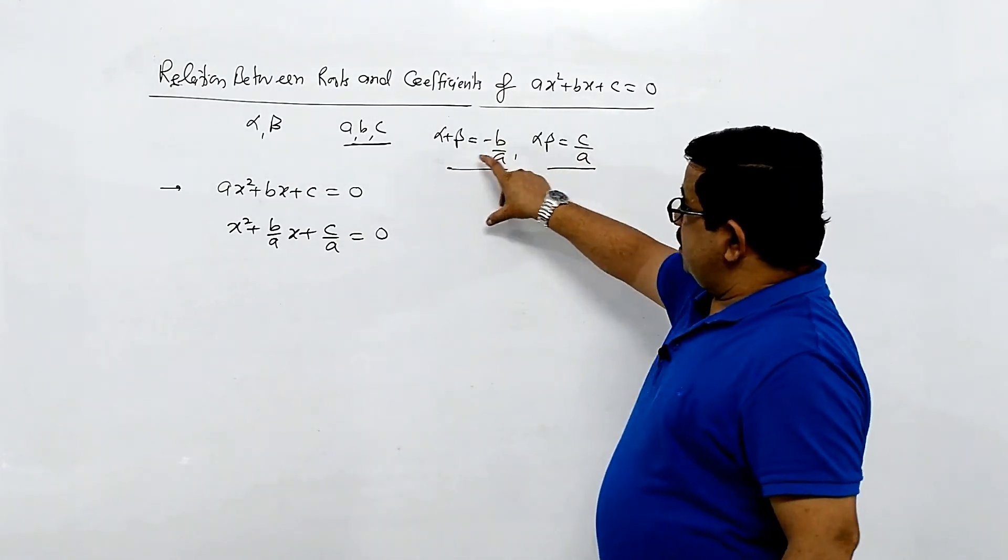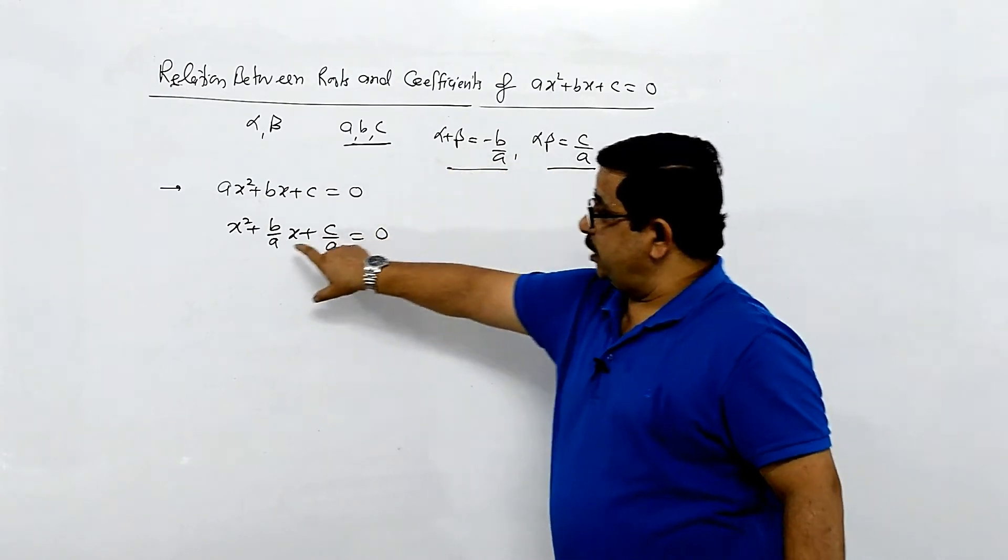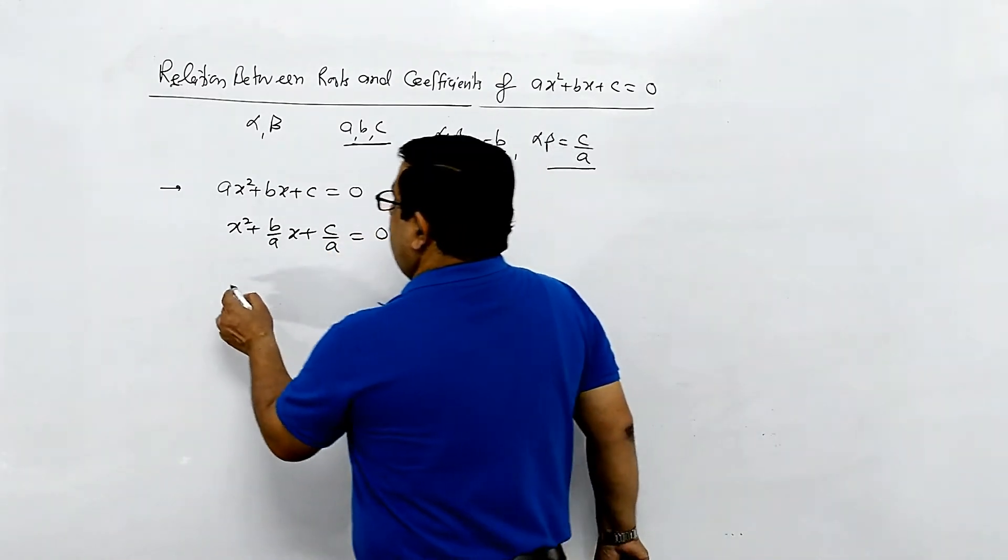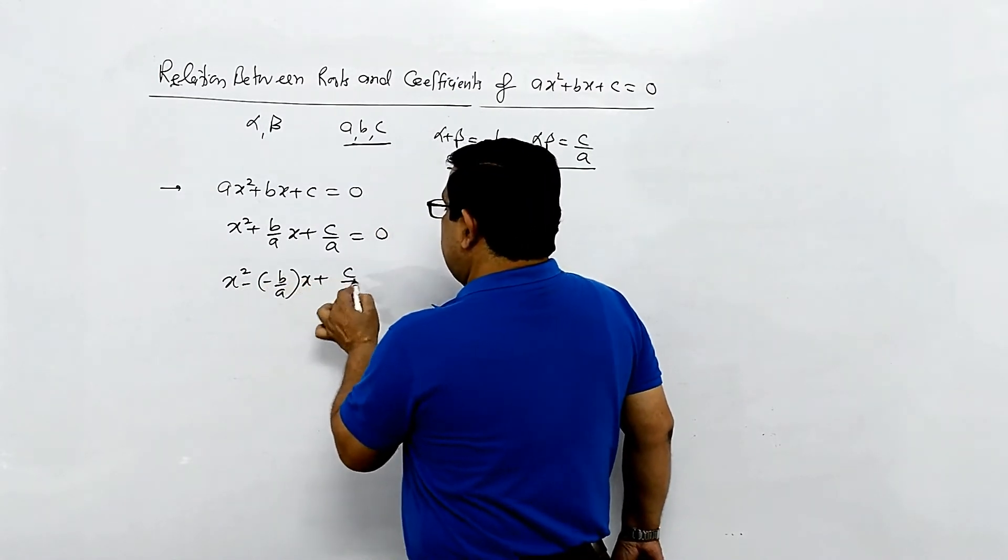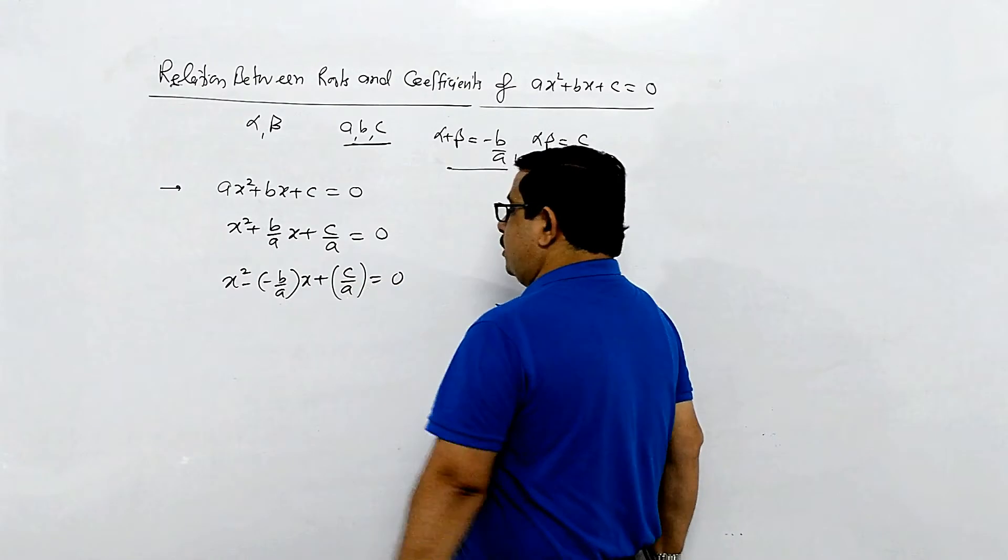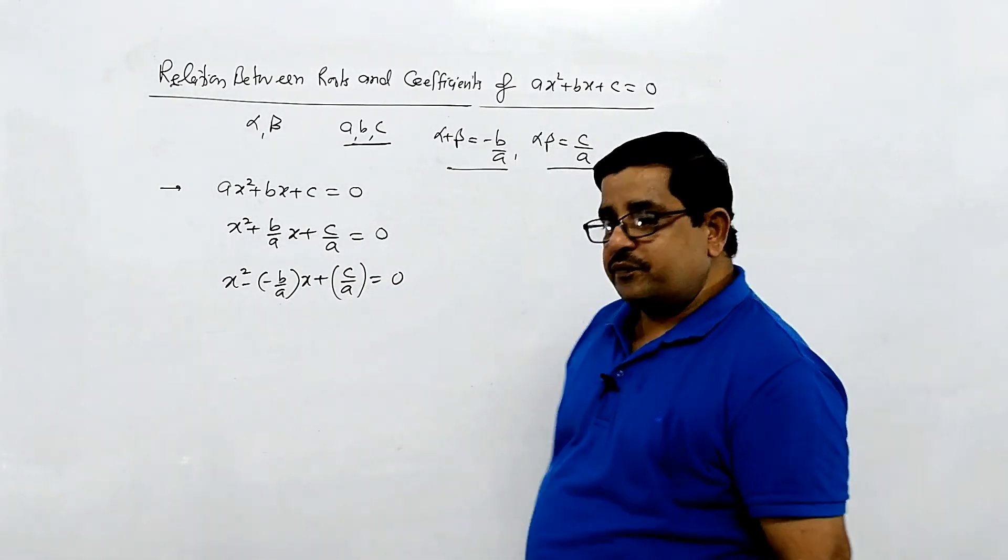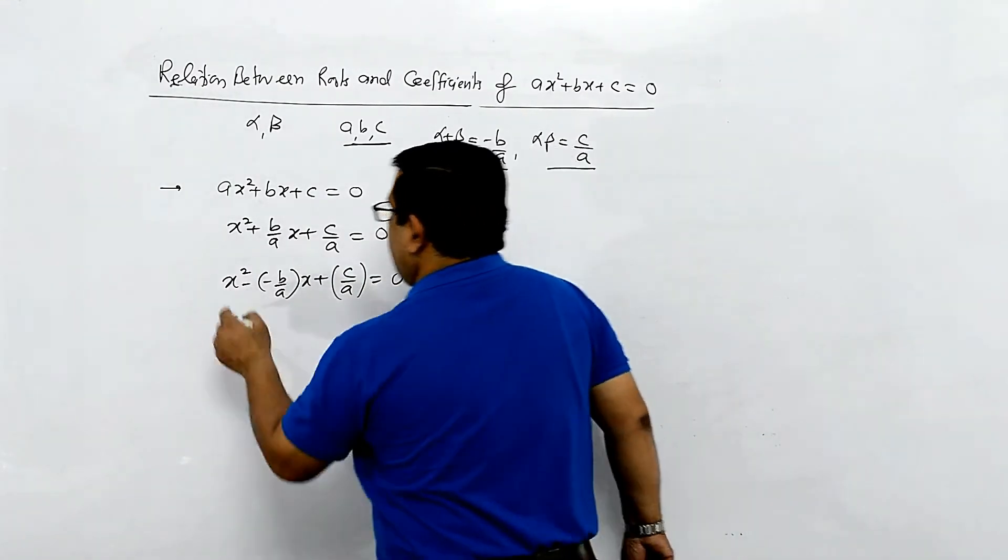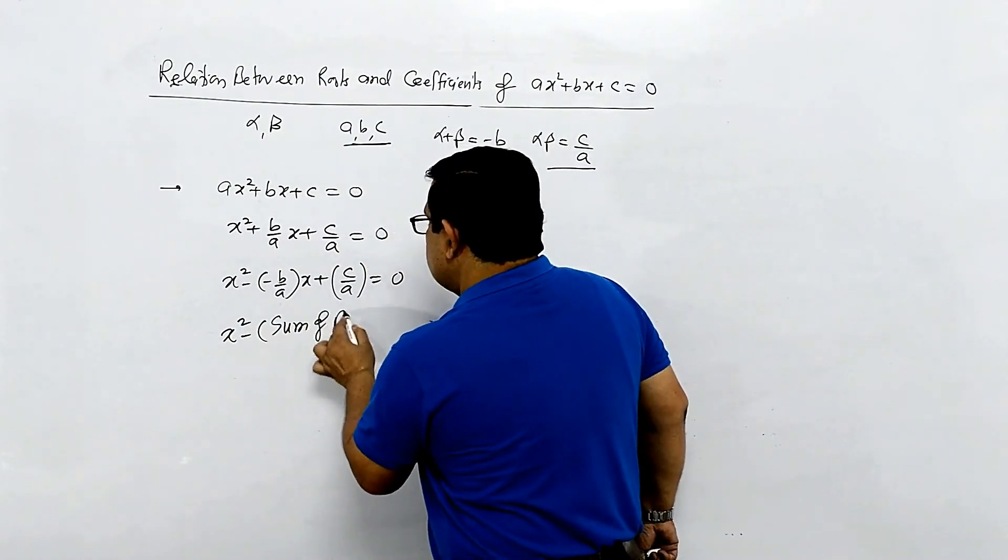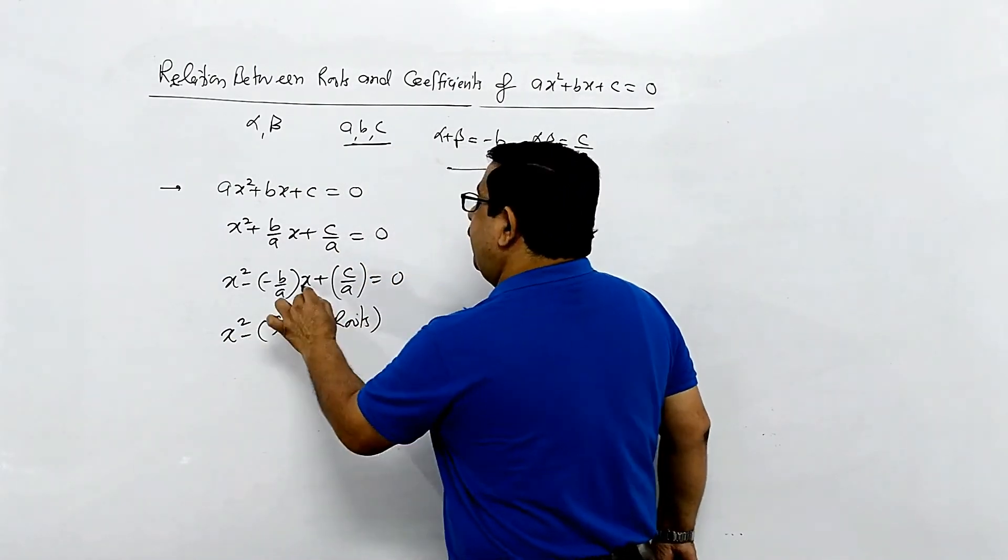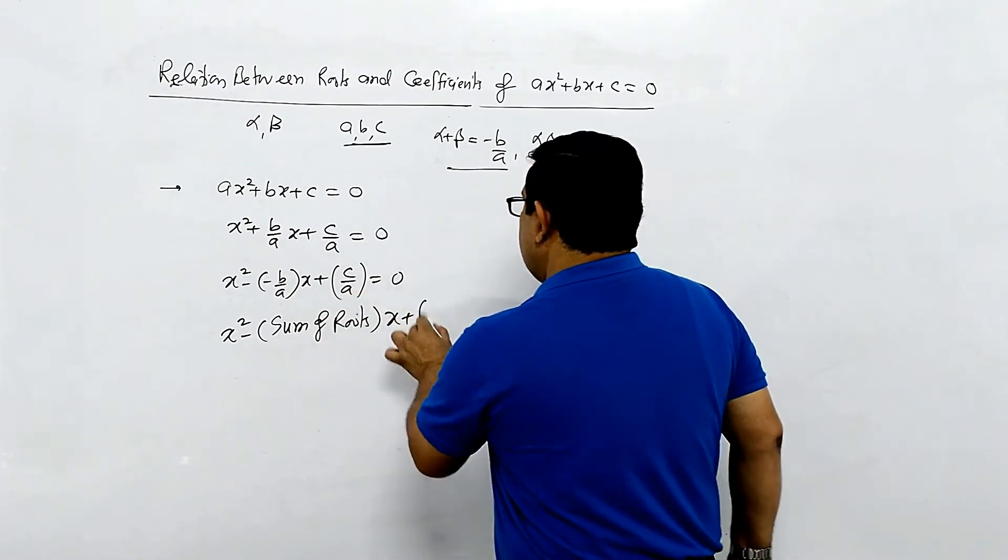Minus b/a is the sum of roots. So the required equation is x² minus (minus b/a) into x plus c/a equals 0. This is x² minus sum of roots into x plus product of roots equals 0.